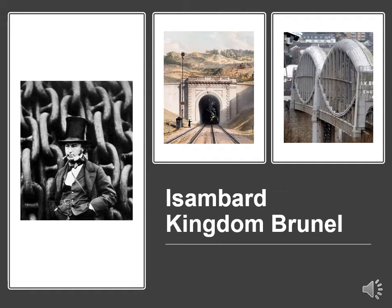The story of track gauge starts off with Isambard Kingdom Brunel. He was born on the 9th of April 1806 and died on the 15th of September 1859. He was an English civil engineer considered to be one of the most ingenious and prolific figures of the Industrial Revolution. He changed the face of the English landscape with his groundbreaking designs. Brunel built dockyards, the Great Western Railway, and a series of steamships, including the first propeller-driven transatlantic steamship, and numerous important bridges and tunnels. His designs revolutionized public transport and modern engineering.